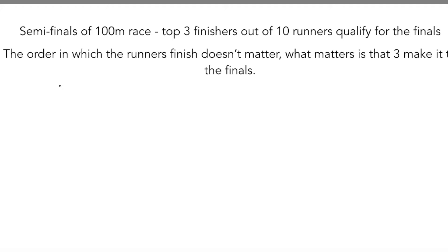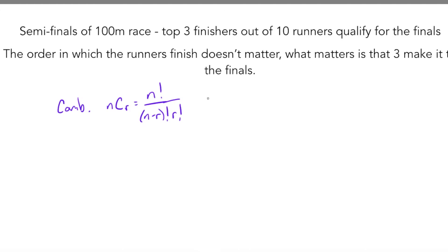Let's walk through these questions. First up, the semi-finals question. We know this is a combination problem mainly because order doesn't matter — we're just taking the top three out of 10. For combinations, the formula is nCr, which equals n factorial over n minus r factorial times r factorial. In this case, n is 10 and r is 3, so that translates to 10 factorial over 10 minus 3 factorial times 3 factorial.